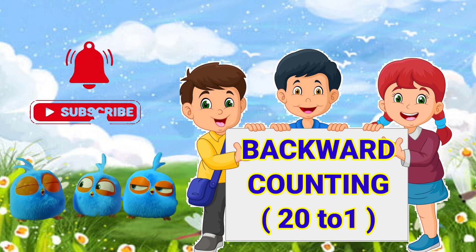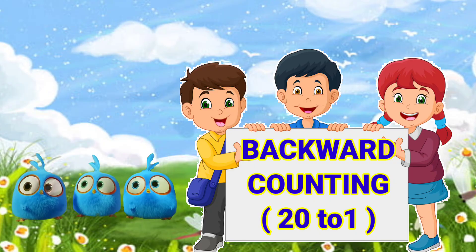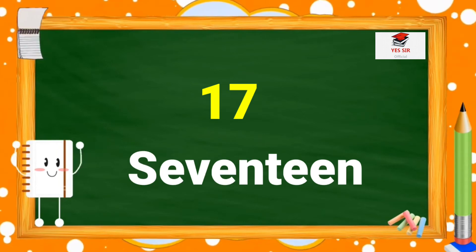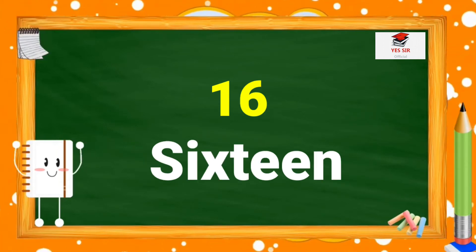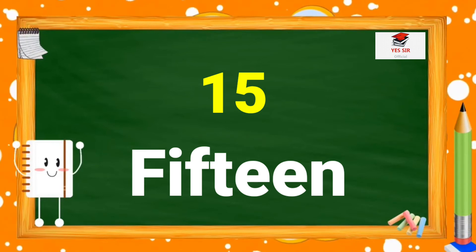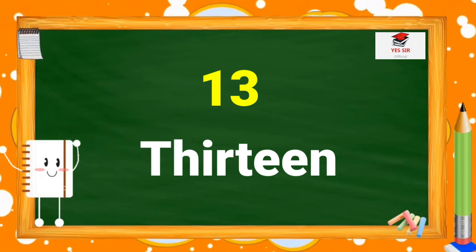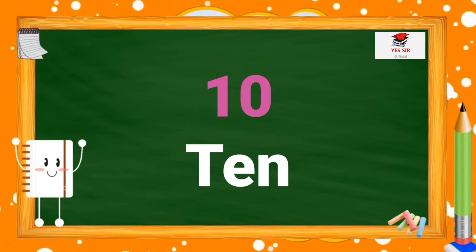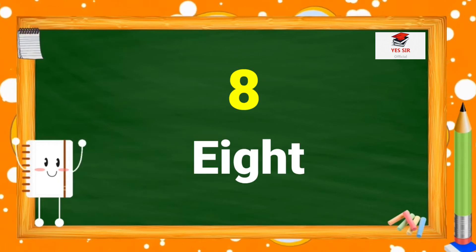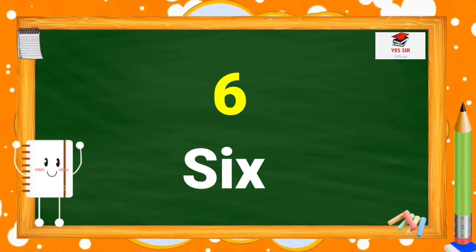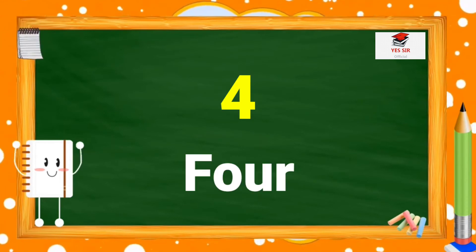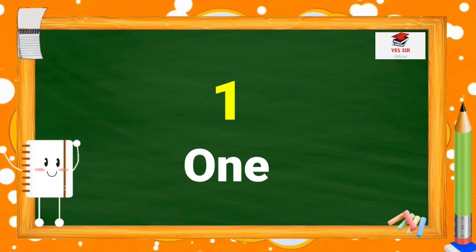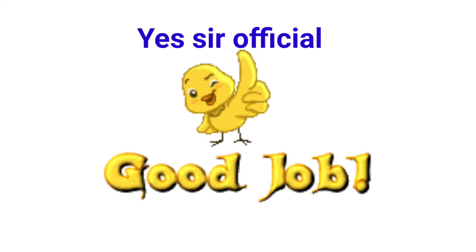Our next chapter is backward counting 20 to 1. 20, 19, 18, 17, 16, 15, 14, 13, 12, 11, 10, 9, 8, 7, 6, 5, 4, 3, 2, 1. Great. Good job. Very good.